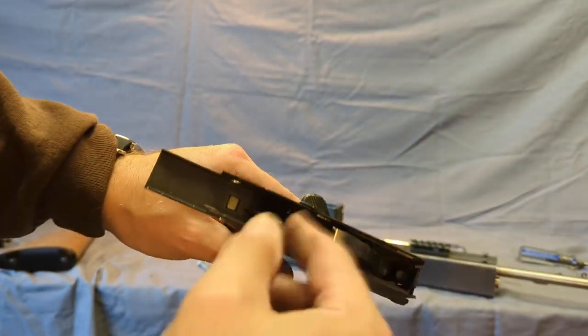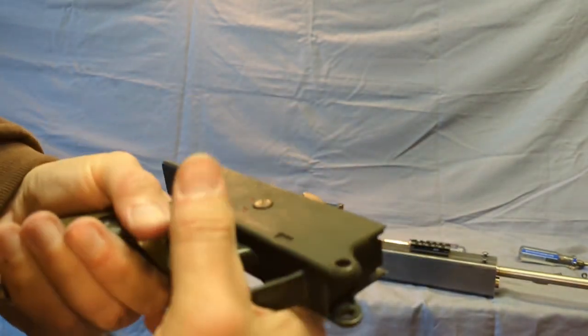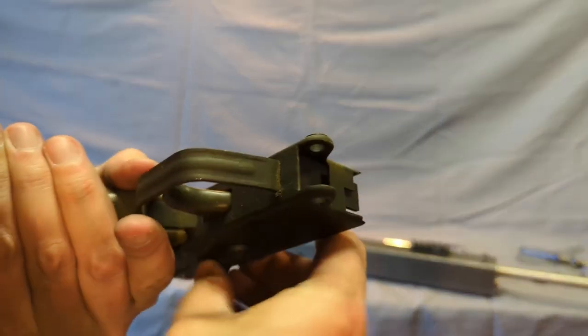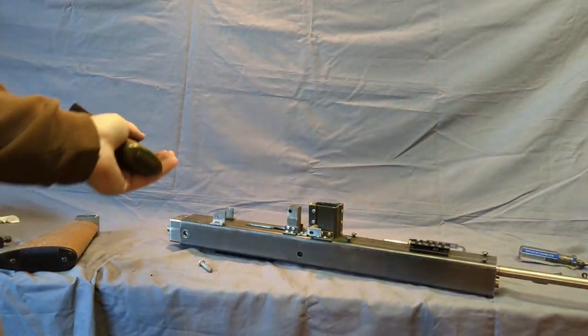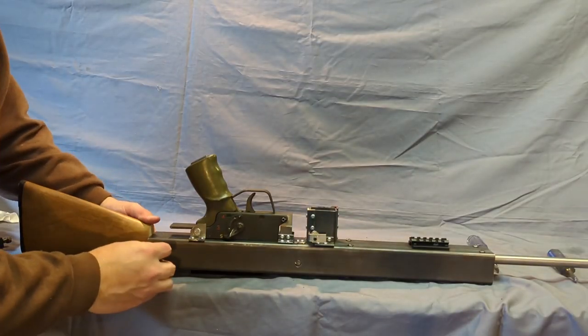But that's just a classic H&K trigger group. I took a bunch of parts out. It's got the whole selector nonsense that obviously would not work in a bolt-action gun. But yeah, you have to take this out to get the bolt back in because it'll catch on that hammer.